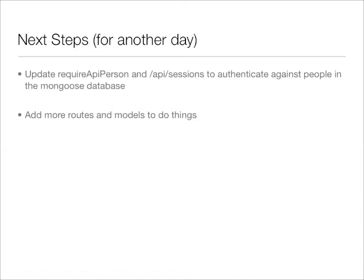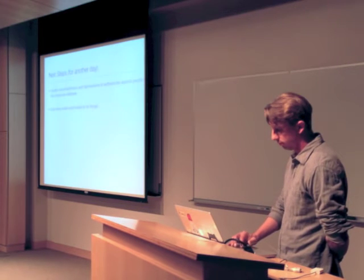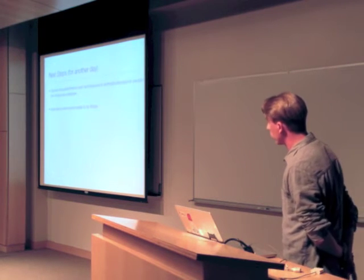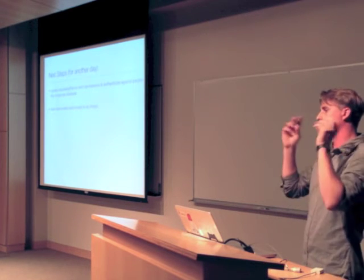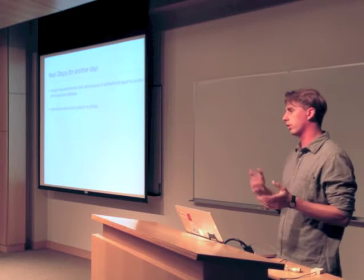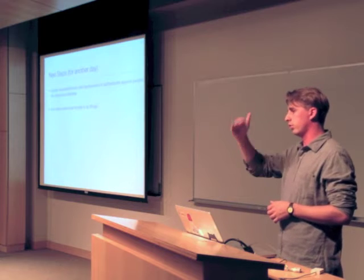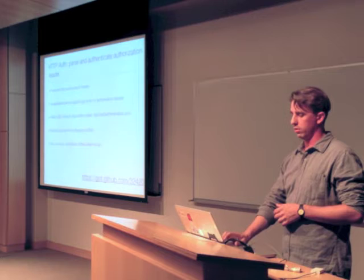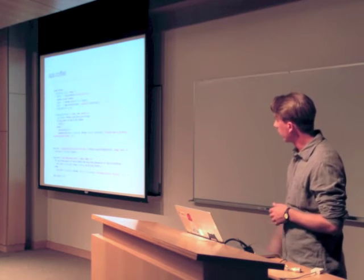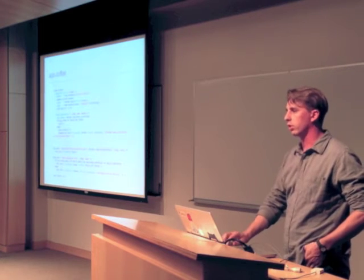The next steps would be require API person. Then you go ahead and add more routes and models. And you'd authenticate against the API person where we were just passing the hard-coded valid API token. We'd actually need to add an API token to get creative for the person. And then just check on that in the required API person, which was the method was right there. Instead of checking for valid API token, we actually do a lookup, similar to how you'd use ActiveRecord to do a lookup.